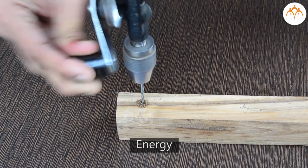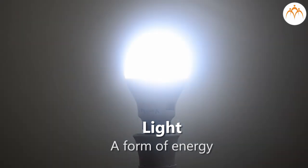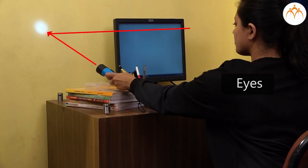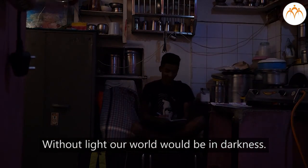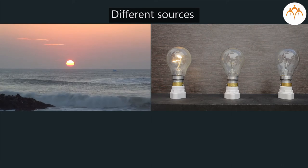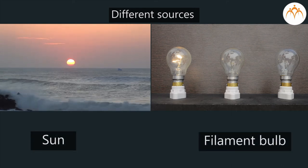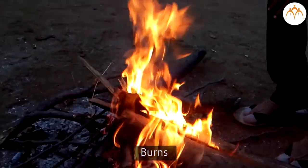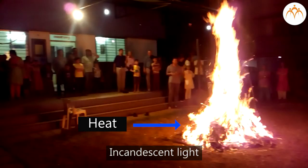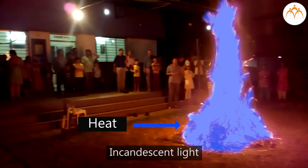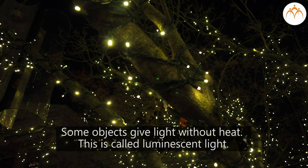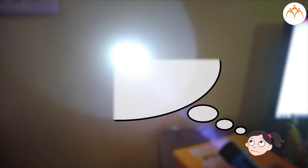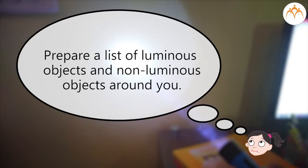Summary. We discussed many forms of energy. Light is one form of energy. We see objects around us with the help of light energy with our eyes. Without light, our world would be in darkness. Light comes from different sources like the sun and a filament bulb. When something burns or becomes hot, it gives out light as well as heat — we call this incandescent light. Some objects give light without heat — this is called luminescent light. Discuss with your friends and prepare a list of luminous objects and non-luminous objects around you.